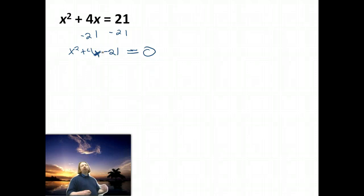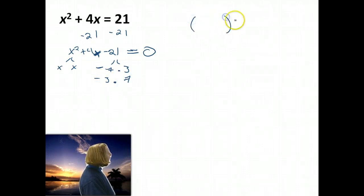So now I can go ahead and start doing my factoring. I know x squared is x and x. Negative 21, probably 7 and 3, much more likely than negative 1 and 21. So it's negative 7 and 3, and negative 3 and 7 are possible combinations. So let's guess and check.